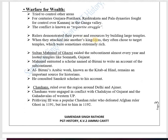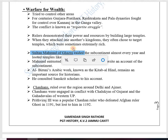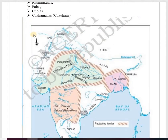Rulers demonstrated their power by building large temples — we'll study this more when discussing the Chola dynasty. When kingdoms attacked one another, they often targeted temples, which were sometimes extremely rich. One such example is Sultan Mahmud of Ghazni. Ghazni is in Afghanistan in Central Asia. He raided the subcontinent almost every year just to gain wealth, and looted temples like the Somnath temple in Gujarat.